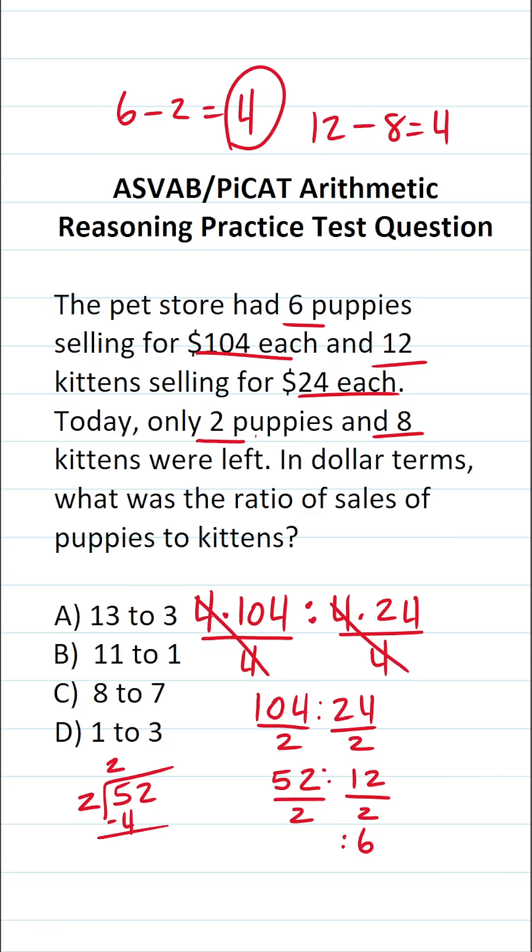2 times 2 is 4. 5 minus 4 is 1. Drop down this 2. 2 times 6 is 12 with no remainder. So this becomes 26 to 6.